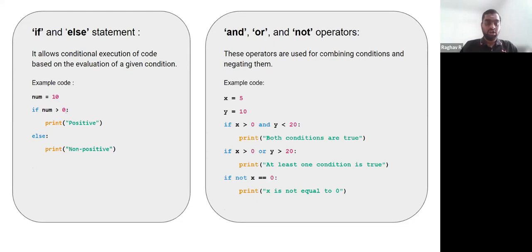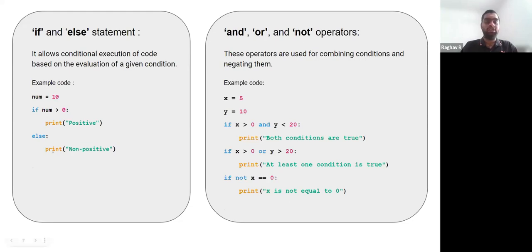Since the number is greater than zero, we will be printing 'positive' on the screen. We will not execute the else clause because the if condition is true, so nothing under the else block will be executed.